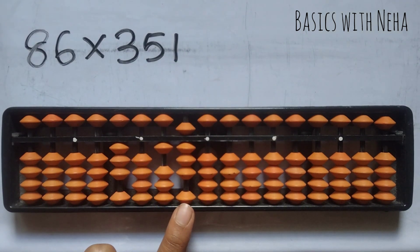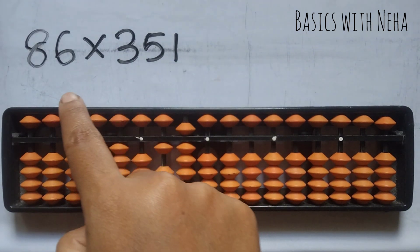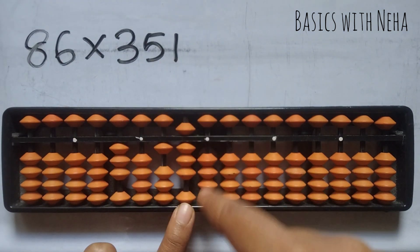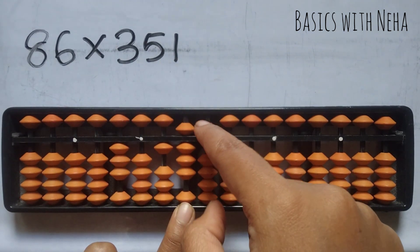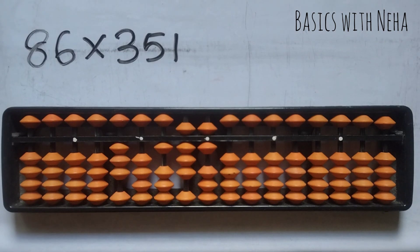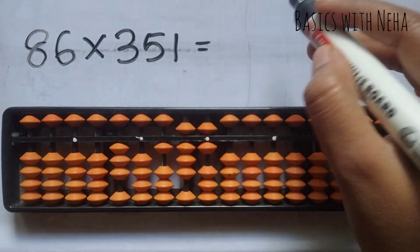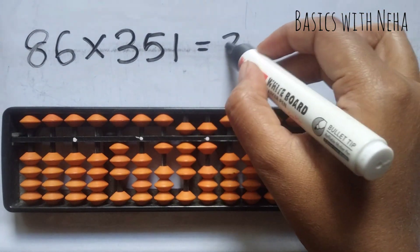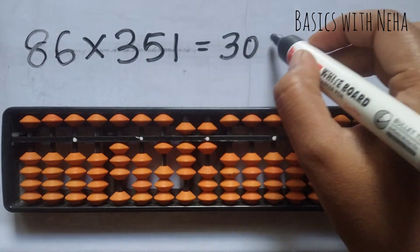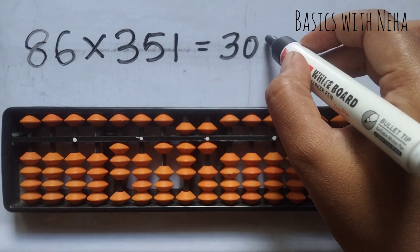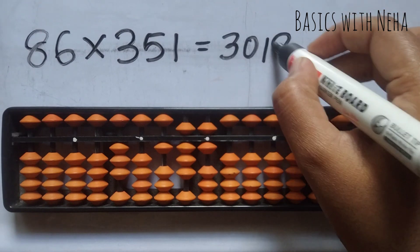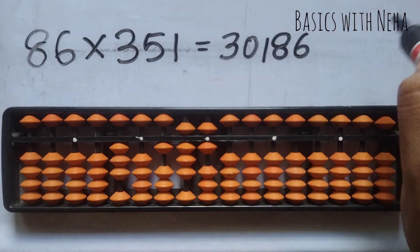3, 0, 30. 6 ones are 6 — it will be 0 and 6. So my answer to this question will be 30,186.